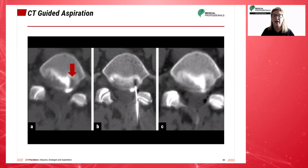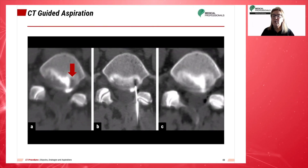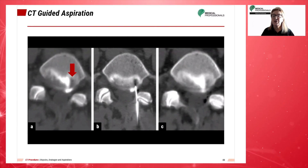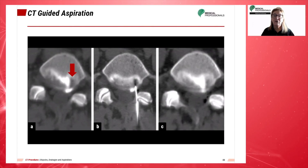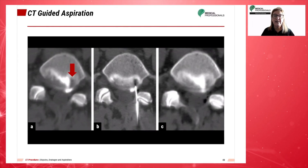These images represent a patient with a discal cyst arising from the L5-S1 disc, causing right S1 radiculopathy. Following a percutaneous CT-guided aspiration, the patient presented with substantial improvement in his radicular pain after 19 months of follow-up.